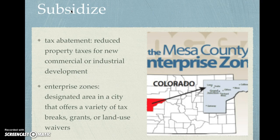Another idea is enterprise zones — a designated area in a city that offers a variety of tax breaks, maybe grants to do business there, and land use waivers. If the land isn't zoned for a business, maybe you get a waiver built into the enterprise zone. This is a physical space; like this map of Colorado where they've carved out a piece as an enterprise zone, designating a physical area that offers a whole range of subsidies and financial incentives for locating your business there.